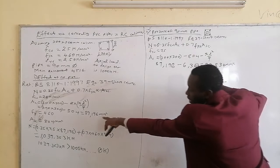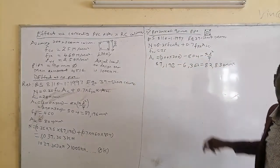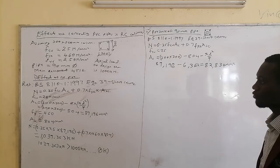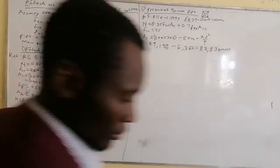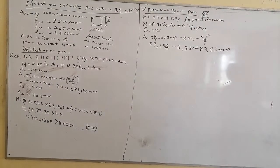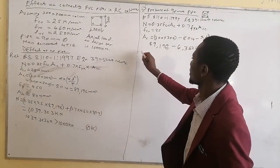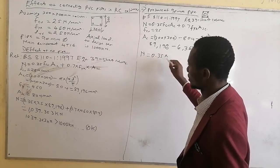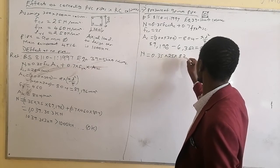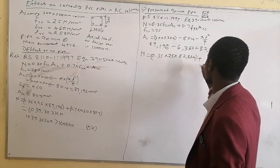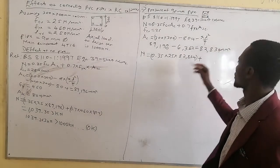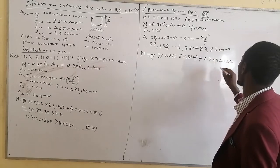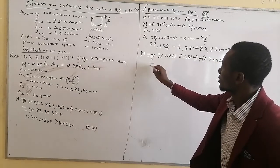When you compare this Ac of 82,834 mm² to the previous value of 89,196 mm², you realise that the effect of the pipe reduces the cross-sectional area of concrete available. Therefore it affects the actual load the column can carry. So we now determine N with the pipe: N = 0.35 × 25 × 82,834 + 0.7 × 460 × 804.